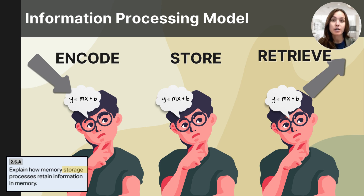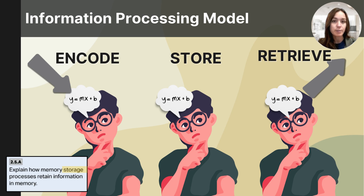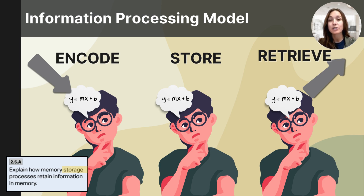As you learned in the previous video, the information processing model of memory uses the terms encoding, storing, and retrieving to explain the way that the brain operates. This model helps us understand how information gets in, stays, and then is taken back out later. In this particular video, I will focus in depth on the step called storage, and it's important to know that the mind has different capacities for storage and different durations.